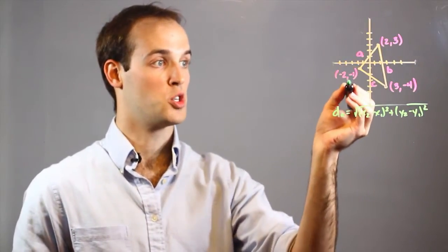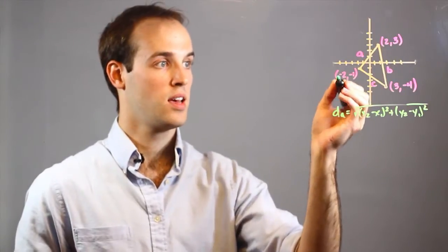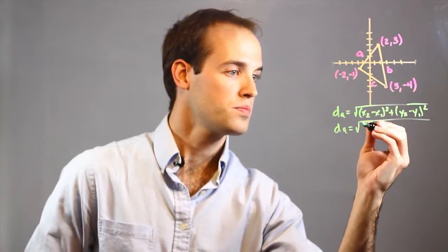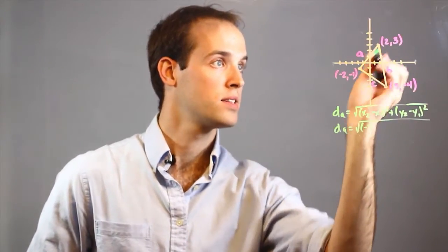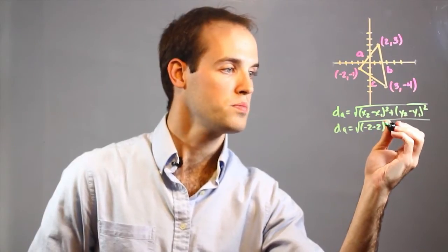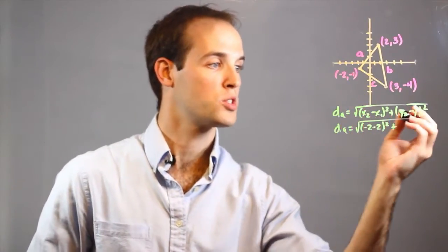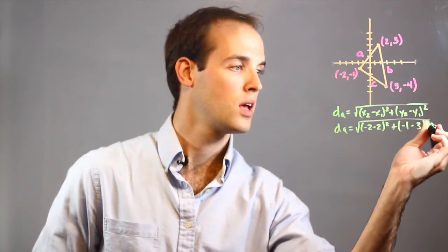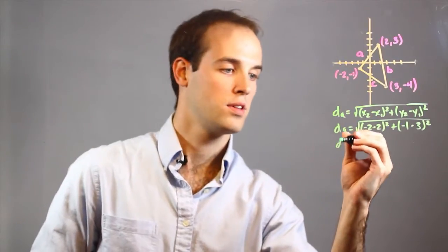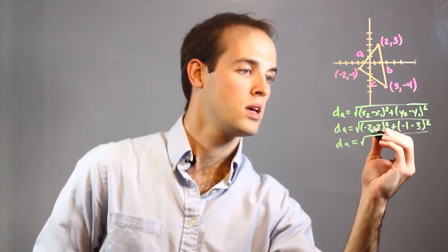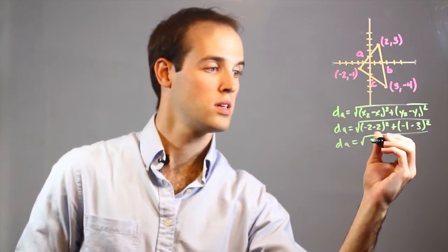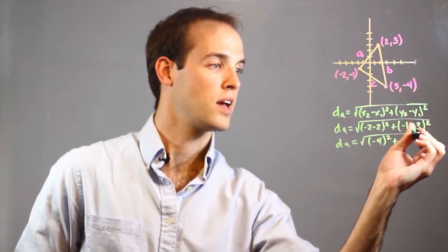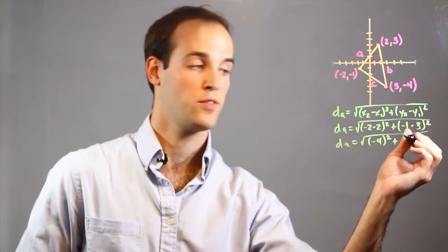So I'm going to do side A first, which you can see is between these two points. I'm going to plug in negative 2 for this x value, negative 2 minus the x value over here, which is 2, squared, plus my y value over here, which is negative 1, minus my y value over here, which is 3.